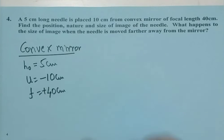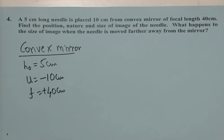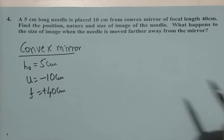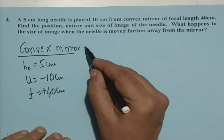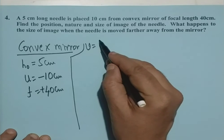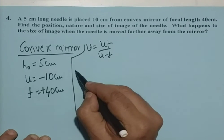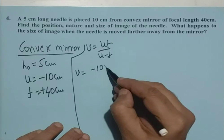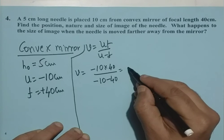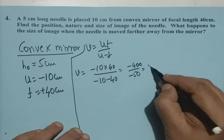Observe the use of writing the type of mirror in the beginning, because that reminds us to write the signs properly. F equals plus 40 cm. Using V equals UF by U minus F: V equals minus 10 times 40 divided by minus 10 minus 40, which is minus 400 by minus 50, giving V equals plus 8 cm.